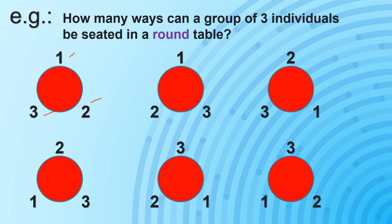But if we are going to analyze each arrangement, it is not really 6 unique arrangements. Looking at the first arrangement, 1, 2, 3, let us use 1 as our point of reference. What is on the right side of 1 is 3, while on the left side of 1 is 2. On the next arrangement, what is on the left side of 1 is 3, while on the right side is 2 — so this is a unique arrangement. We now have 2 distinct arrangements.